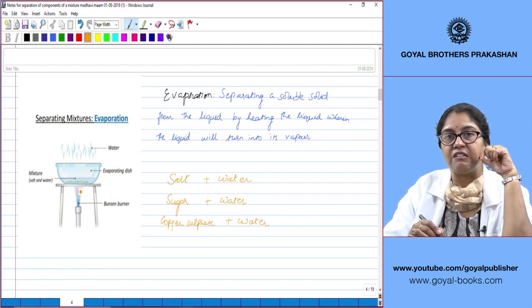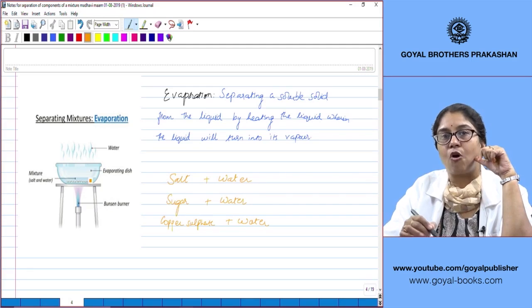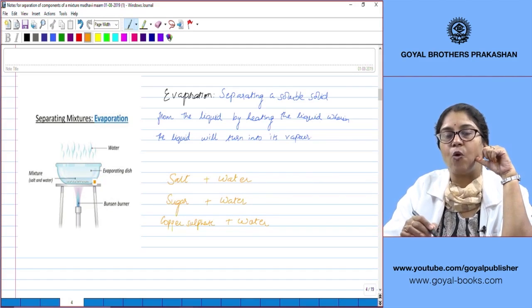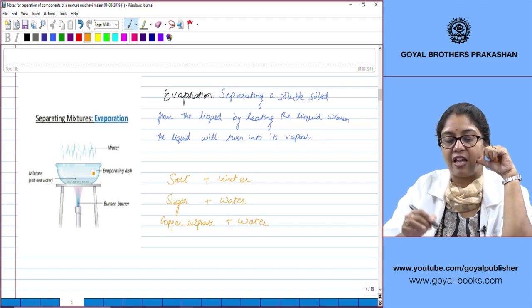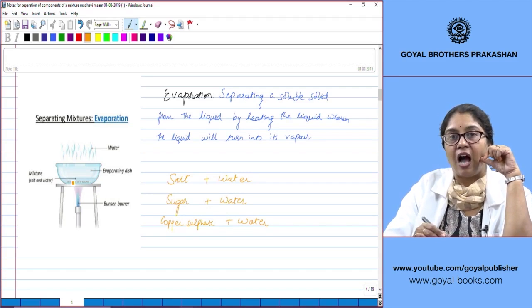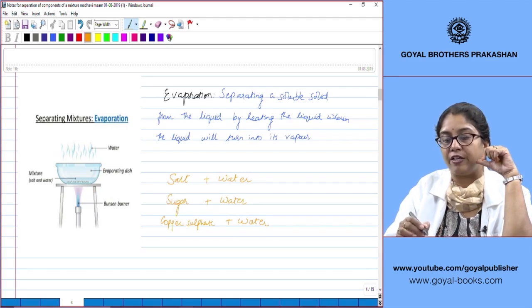When you heat it, if suppose I have taken salt and water, the water will start changing into its vapor state and it will be lost to the atmosphere. And what remains as a residue after the process of evaporation in your evaporating dish is the solid.